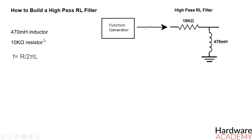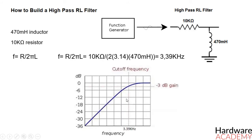Since the formula for a high-pass RL filter is f = R/2πL, doing the math, we will get a cutoff frequency of approximately 3.39 kHz. This means all frequencies above 3.39 kHz will be passed through without attenuation, while frequencies below this value will begin to get attenuated.